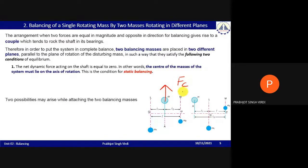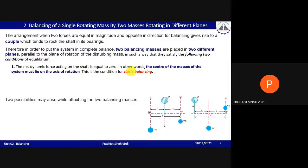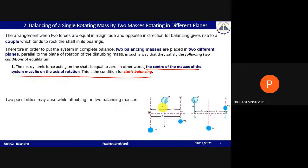The centrifugal force is a dynamic force because its direction continuously changes as the shaft rotates. The first condition for static balancing is that the center of mass of the system must lie on the axis of rotation. This is the condition for static balancing.